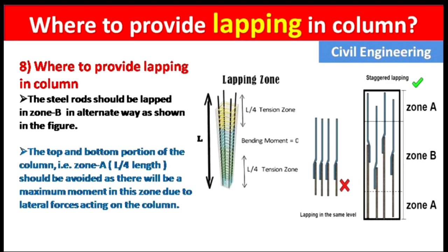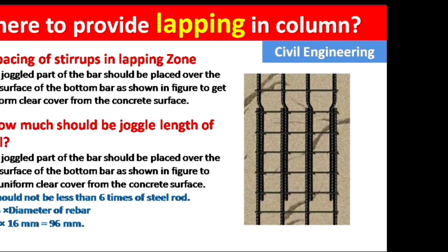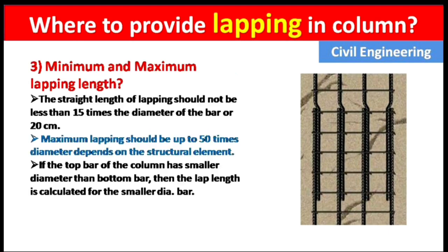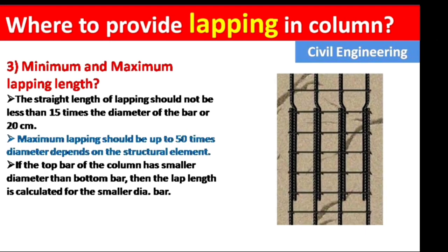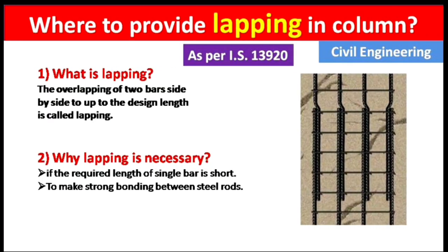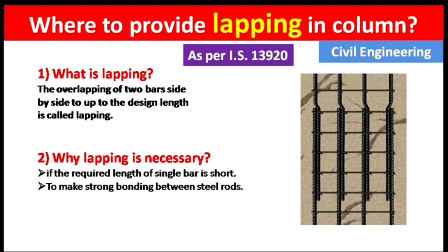So these are the most important points about lapping in a column: the lapping zone, spacing between stirrups, and maximum and minimum overlapping length. Please like this video and subscribe to the channel for new updates about civil engineering. Thank you.